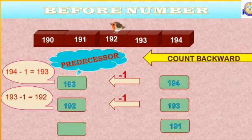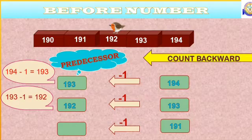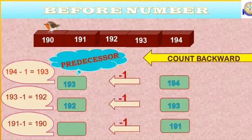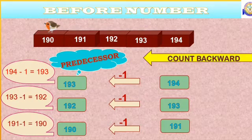Let's take one more number. That is 191. What comes before 191? What you should do? Yes, subtract one from 191. 191 minus 1 equal to 190. Before 191, we get 190.